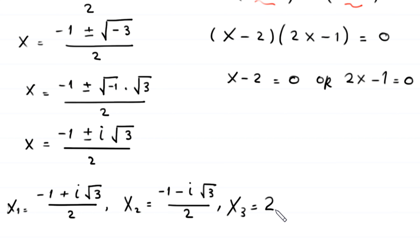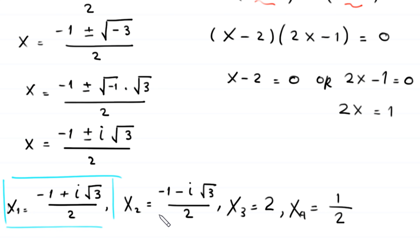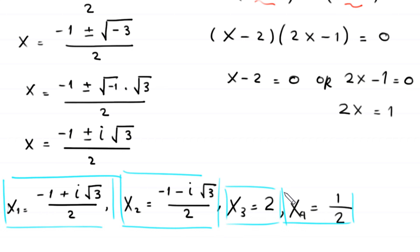From (x − 2) = 0, the third value is x = 2. From (2x − 1) = 0, we get 2x = 1, so the fourth value is x = 1/2. Therefore, we have four solutions: x = (−1 + i√3)/2, x = (−1 − i√3)/2, x = 2, and x = 1/2.